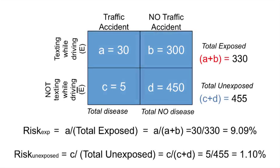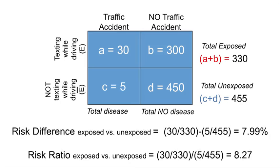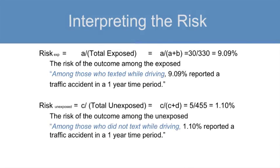Here is the data in the 2x2 table. Note the texting exposure is on the left-hand side and the disease outcome — traffic accident — is on the top. We calculate the risk in the exposed as 9.09%, and the risk in the unexposed as 1.10%. To calculate the risk difference, you subtract the risk in the exposed minus that in the unexposed to get 7.99%. For the risk ratio, you divide the risk in the exposed by the risk in the unexposed to get 8.27.